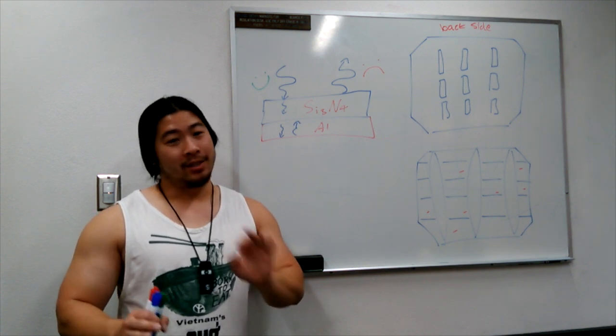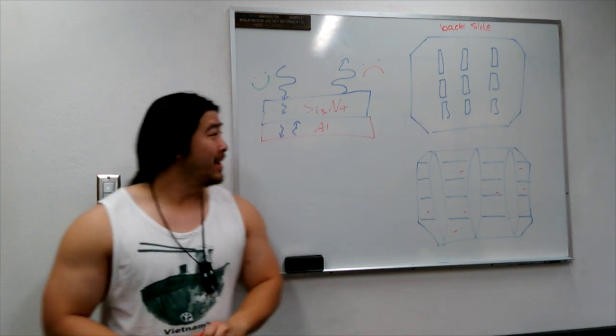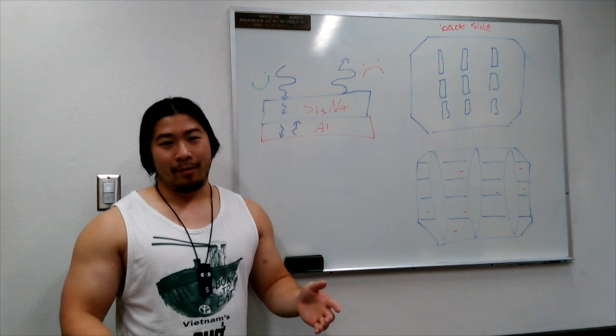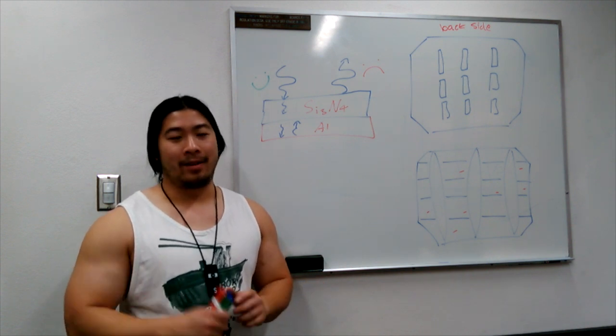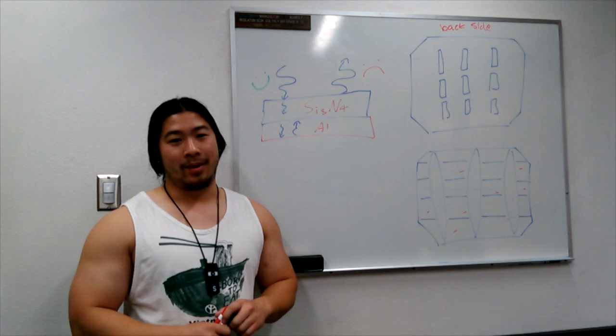Alright, we're almost done with creating our solar cell. Just three more steps. Bear with us. Now that our wafers are dry, we're going to apply another layer onto the front side of the wafer. We're going to apply an anti-reflective coating.